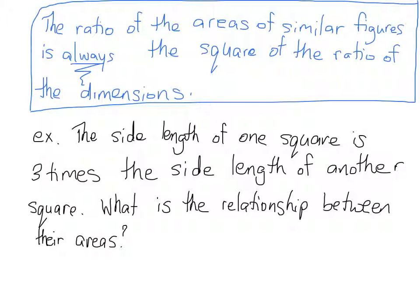Since one square is three times the size of the other, as far as dimensions, then the area of one will be three squared times the other. So the area of the second square is actually nine times bigger than the other one.